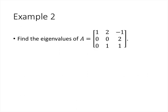Now let's do another example, this time with a 3 by 3 matrix. When we compute A minus lambda I, all we're really doing is subtracting lambda from the diagonal entries. That gives us the matrix [1 minus lambda, 2, negative 1; 0, negative lambda, 2; 0, 1, 1 minus lambda]. Now we need to take the determinant of this 3 by 3 matrix, which can be a little annoying.